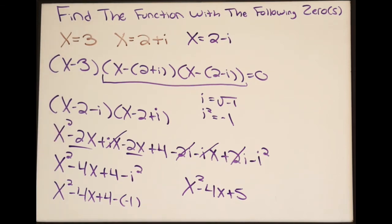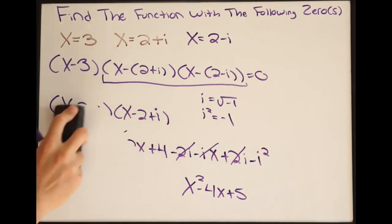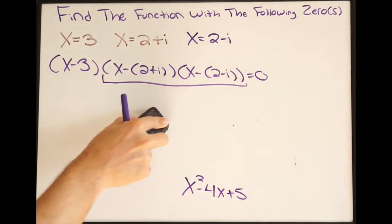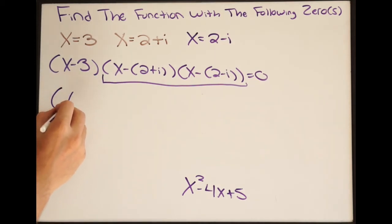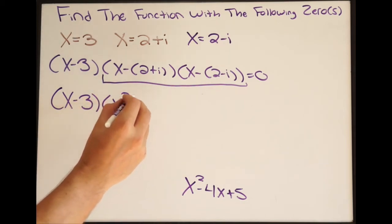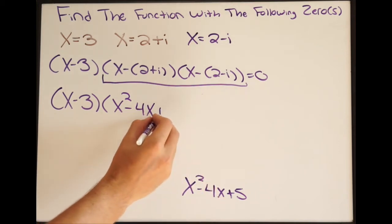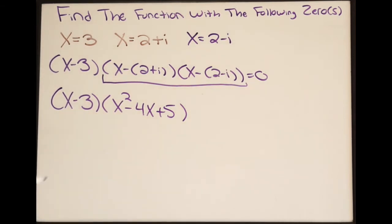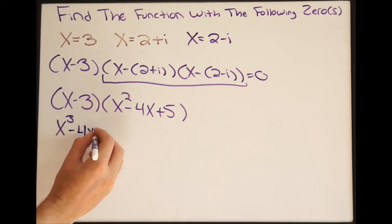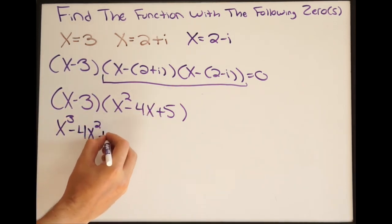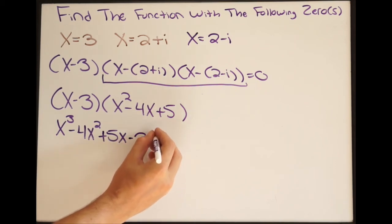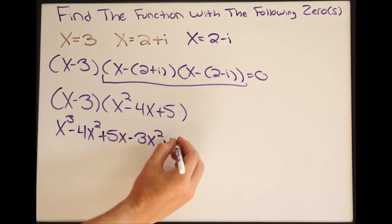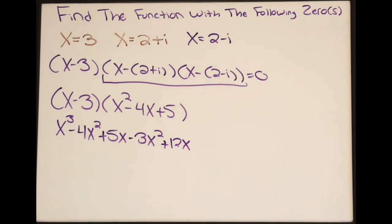Now we multiply by the remaining factor (x minus 3), giving us (x minus 3)(x squared minus 4x plus 5). Starting with x: x times x squared is x cubed, x times negative 4x is negative 4x squared, x times 5 is positive 5x. Then for negative 3: negative 3 times x squared is negative 3x squared, negative 3 times negative 4x is positive 12x, negative 3 times 5 is negative 15.